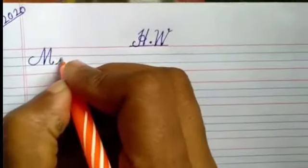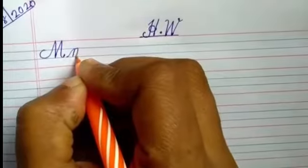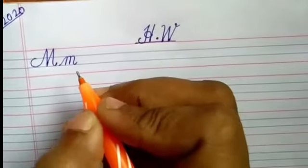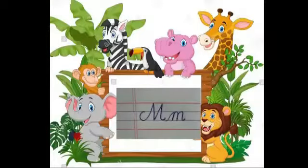Now we will make small turns between line number 2 and 3. Two turns you will make. This is M. This is capital and small M.